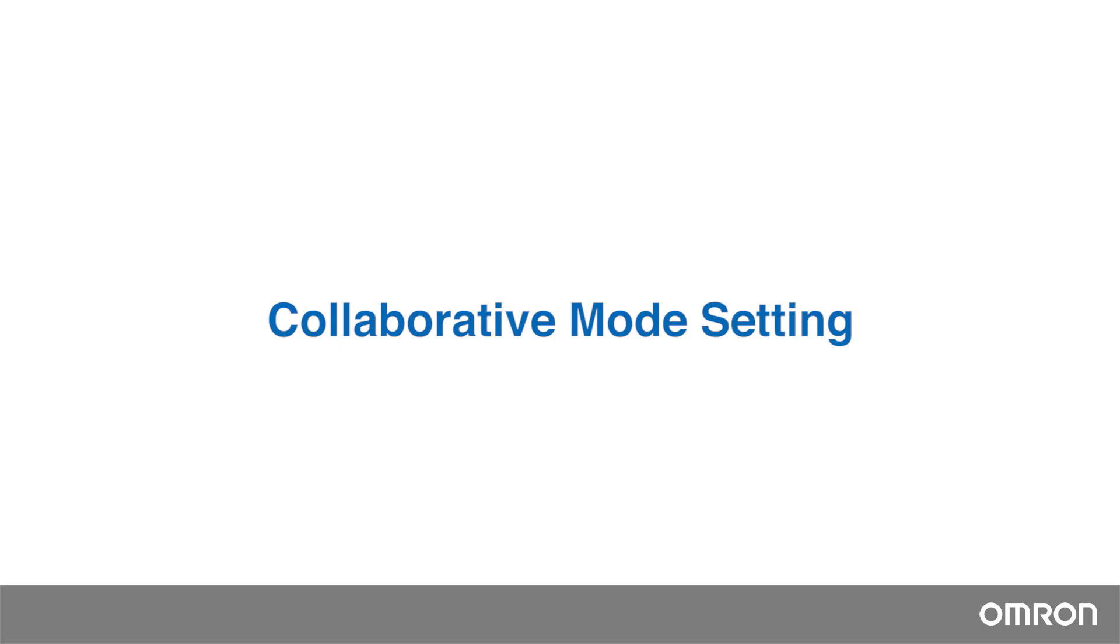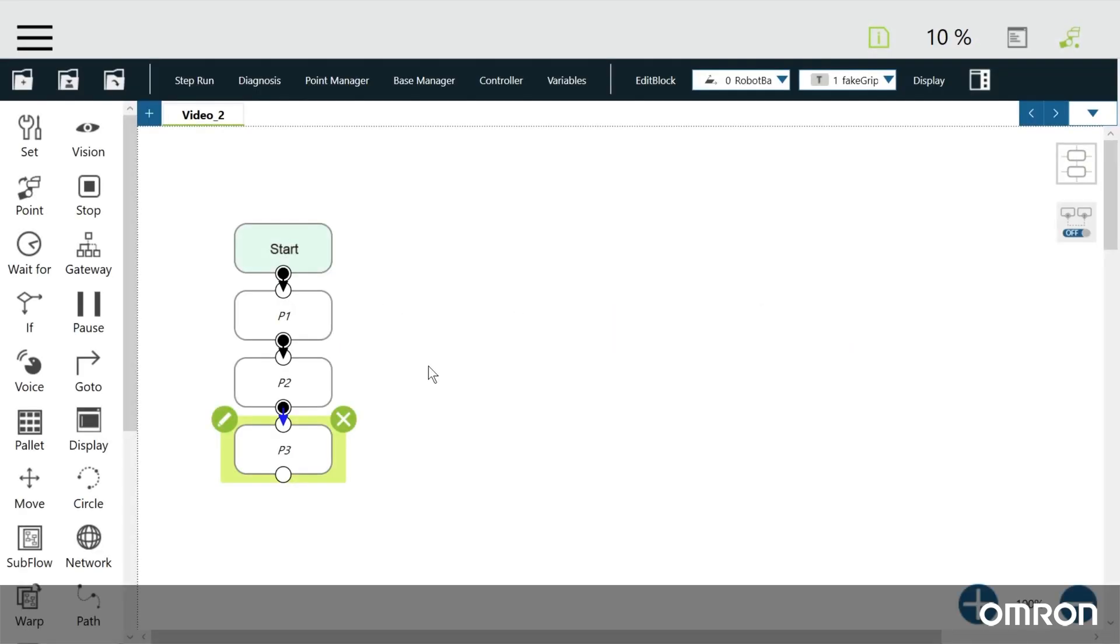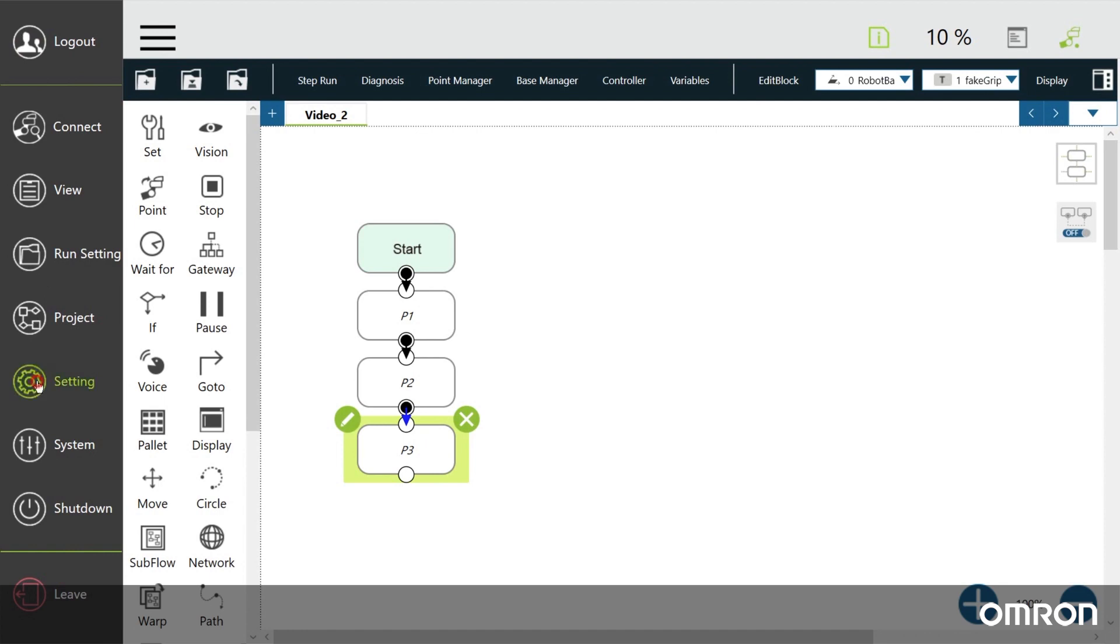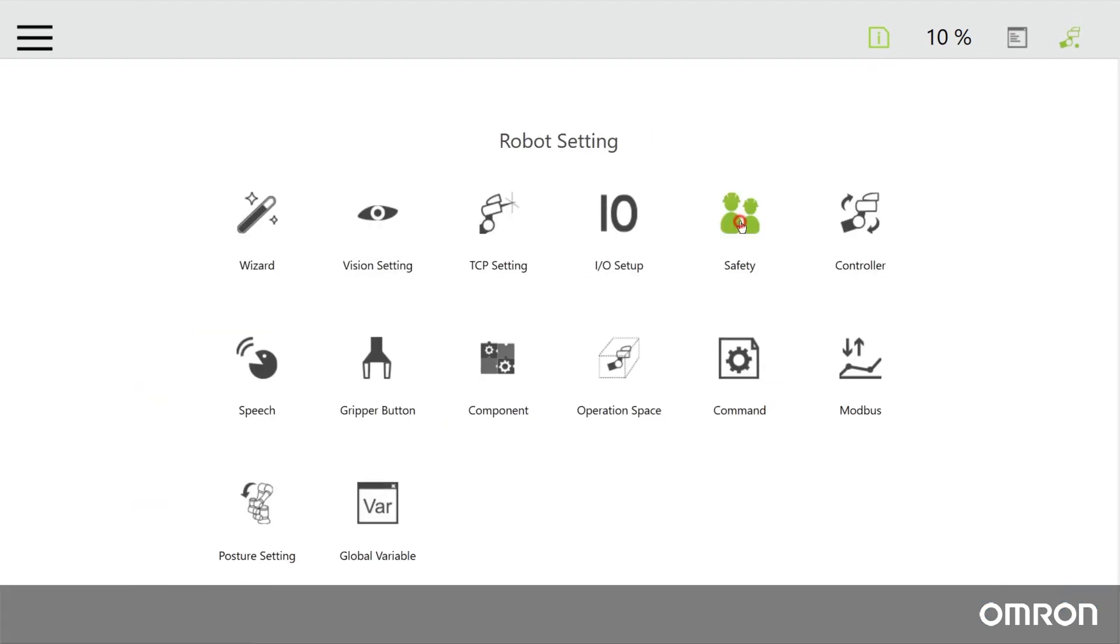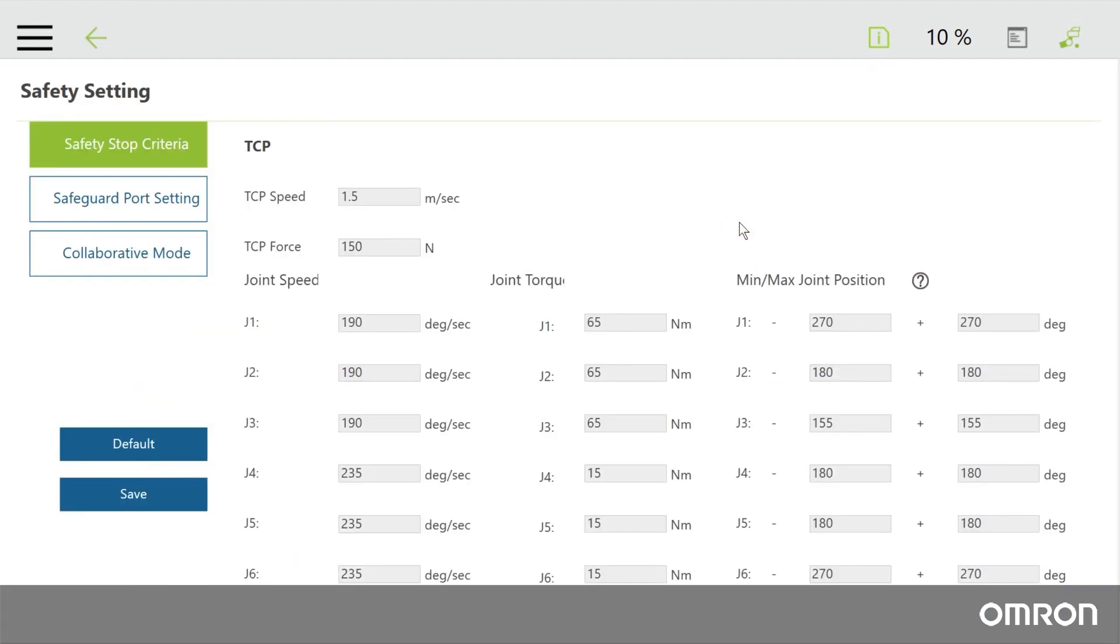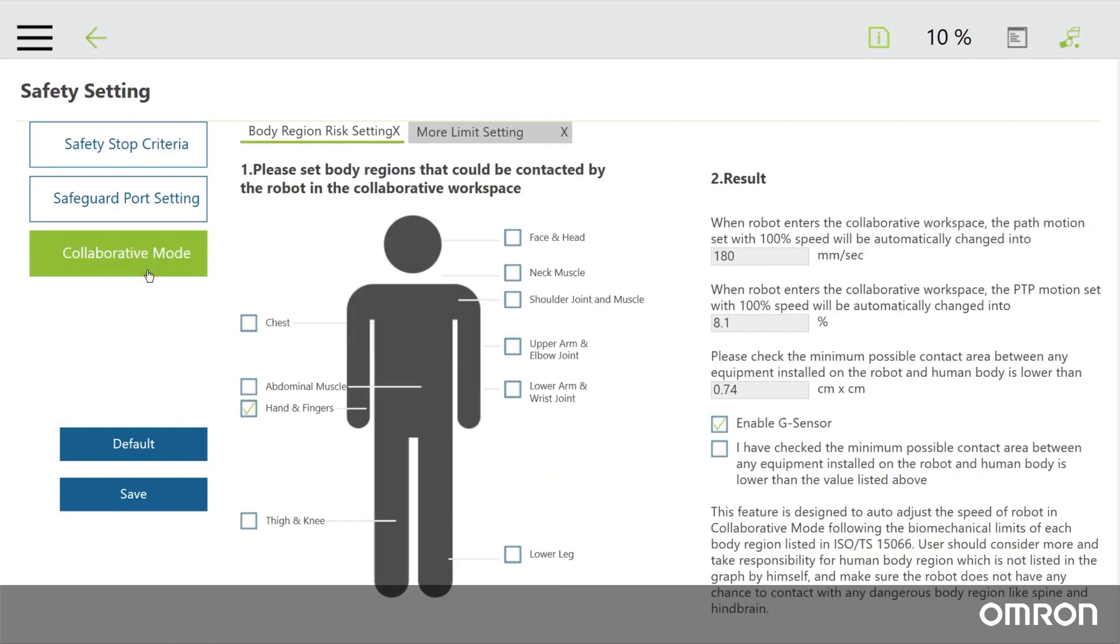Let's talk about adjusting the settings in collaborative mode. You can adjust the settings of collaborative mode by going to Menu, Setting, and Safety. Click on the collaborative mode setting button to set up the maximum speeds and torques for the individual joints. The collaborative mode setting is divided into two parts.